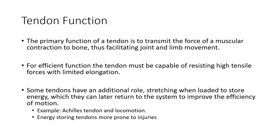Tendon functions: the primary job of tendon is to transmit forces from a muscle to a bone, facilitating movement, and also protecting the muscle. For a tendon's function to be efficient, we want it to be able to resist tensile forces with limited elongation — we don't want them to be super stretchy. They should have some stiffness, which is not the same as a stiff joint.